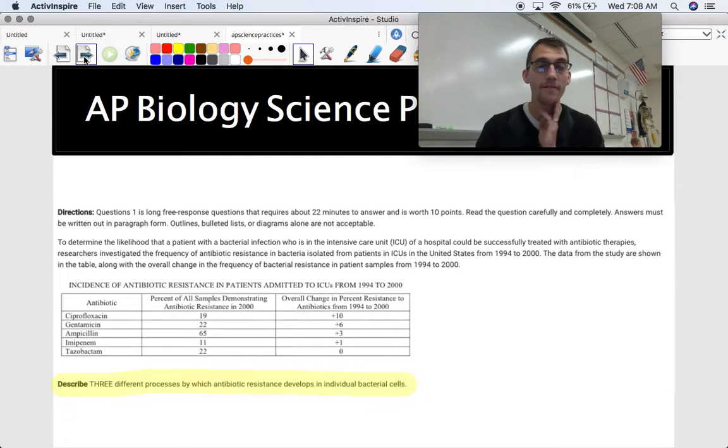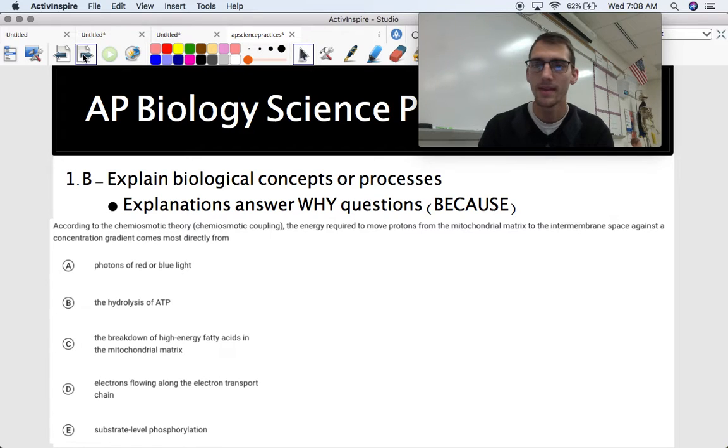And here's a one point A question in the FRQ form. And I'm not going to read the whole thing. You can read that on your own. But it says, describe three different processes by which antibiotic resistance develops in individual bacterial cells. So this question right here would be part of like a larger FRQ type question. This would probably be the first part of a long FRQ. Describe three different processes. Just like, all right, tell us what you know about the three different ways antibiotic resistance develops. So you might tell me about conjugation, you might tell me about transduction, you might tell me about transformation, that kind of stuff. How does bacteria gain that gene to allow it to be antibiotic resistant?